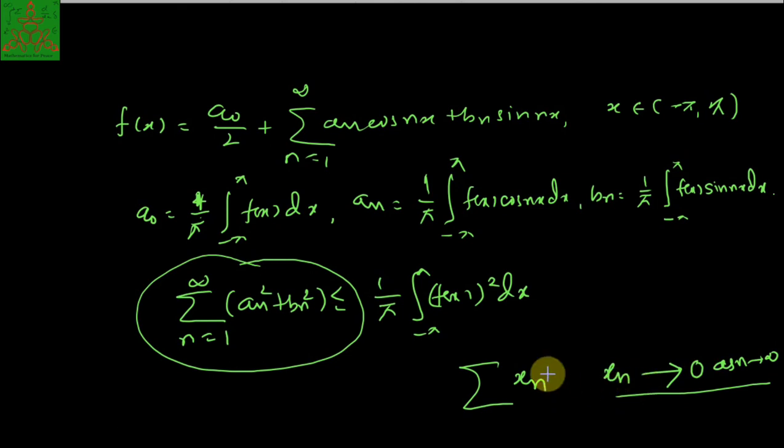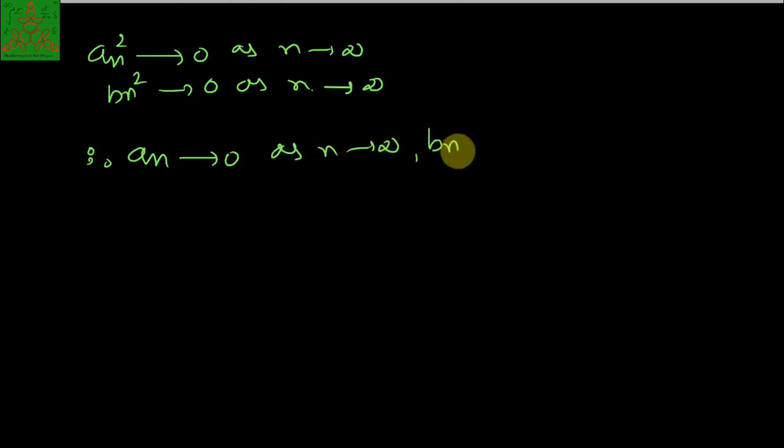Since xₙ tends to 0 if the summation of xₙ is convergent, we can say that aₙ² plus bₙ² is also tending to 0 as n tends to infinity. Both are squares of numbers tending to 0, so aₙ² tends to 0 and bₙ² tends to 0 as n tends to infinity. Therefore, aₙ tends to 0 as n tends to infinity, and bₙ tends to 0 as n tends to infinity.